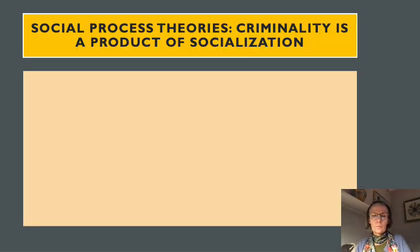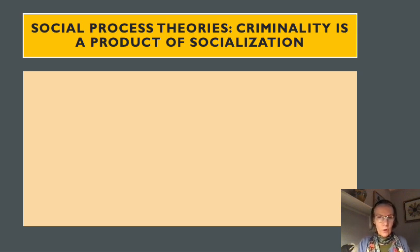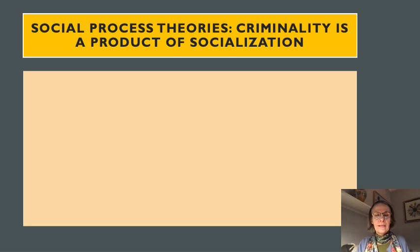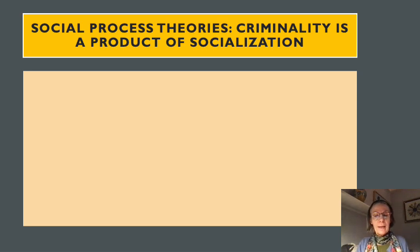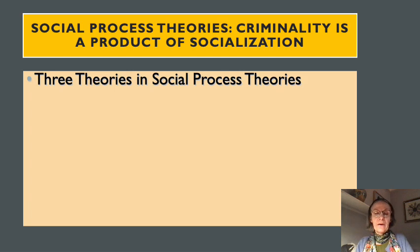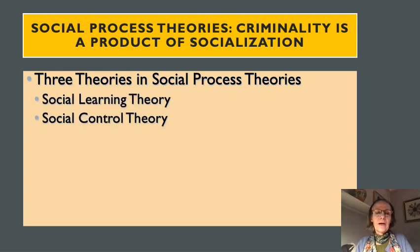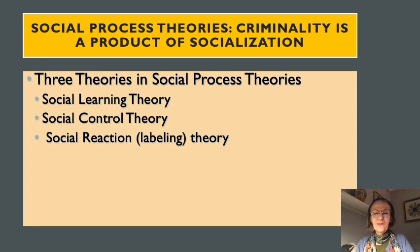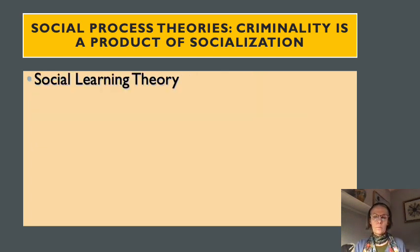The other main branch is the social process theories. These theories acknowledge that poverty may play a role in criminal behavior, but note that many people grow up in poverty and are not criminals — and conversely, people from affluent areas also commit crimes. Social process theory argues that criminality is a product of socialization. There are three theories within this branch: social learning theory, social control theory, and social reaction theory.